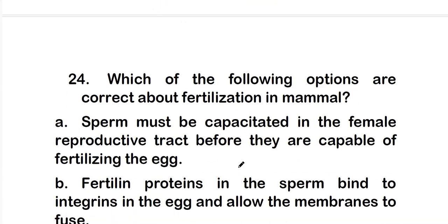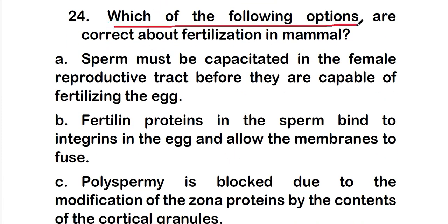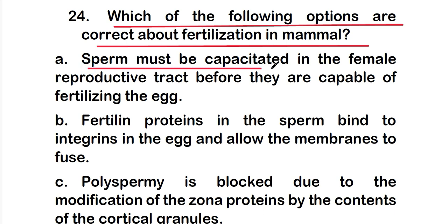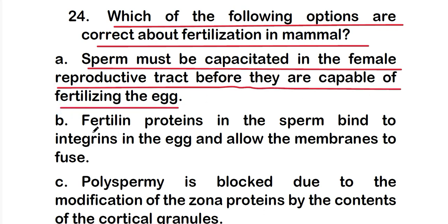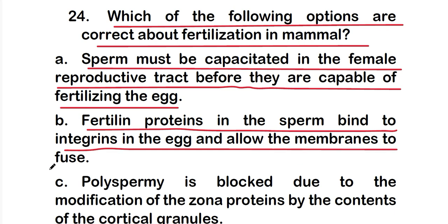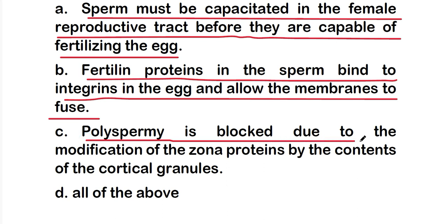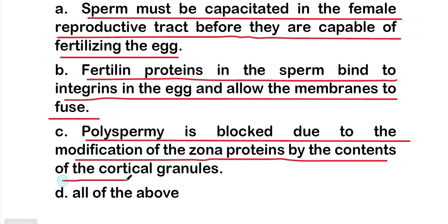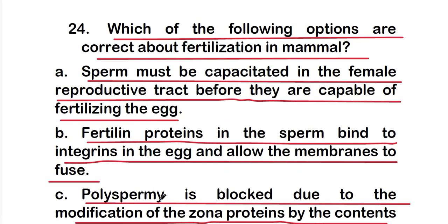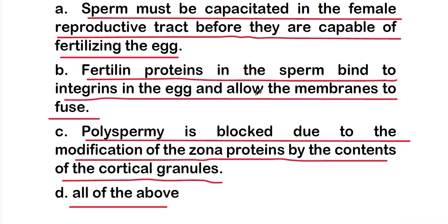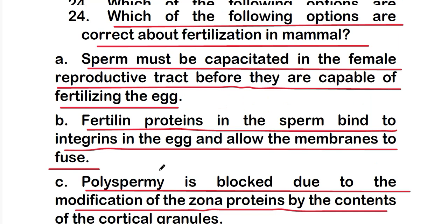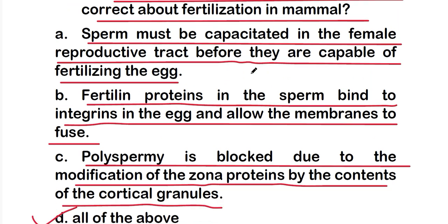Question 24: which of the following are correct about fertilization in mammals? Option A: sperm must be capacitated in the female reproductive tract before fertilizing the egg. Option B: fertilin protein in the sperm binds to integrins in the egg to allow membrane fusion. Option C: polyspermy is blocked due to modification of zona pellucida proteins by cortical granule contents. Option D: all of them. The right answer is option D — all statements are correct.